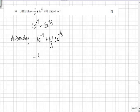Tidying it up slightly we've got minus 6 over x to the 4 plus 10 over 3 x to the minus 1 third.